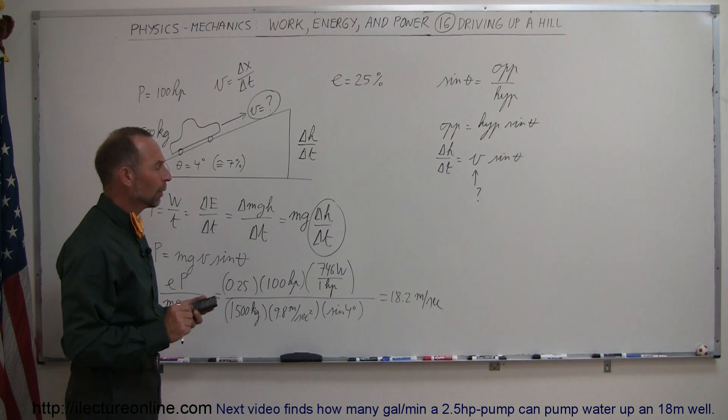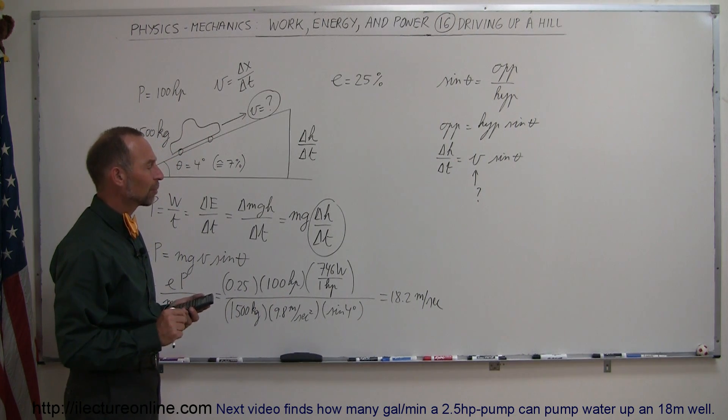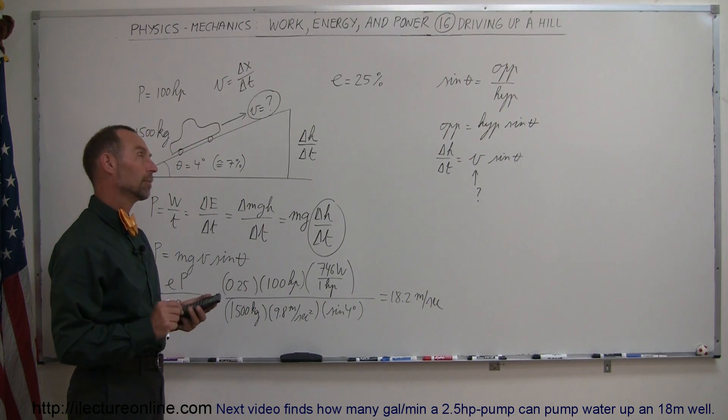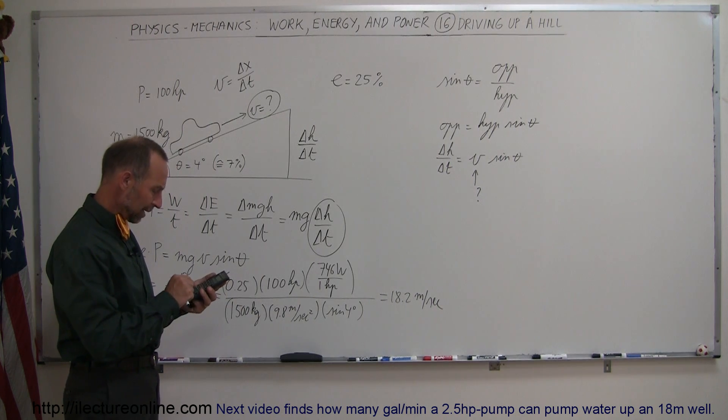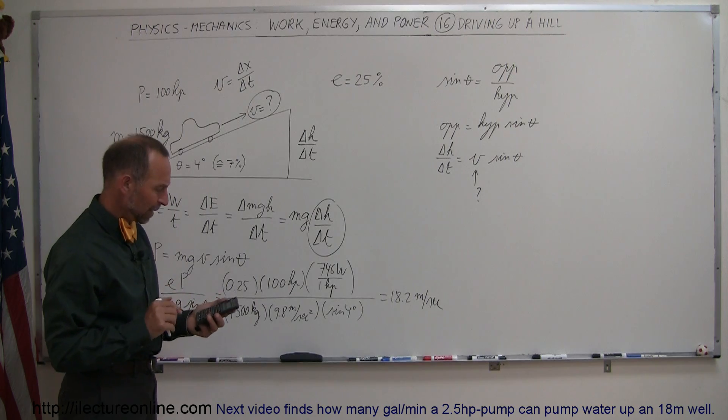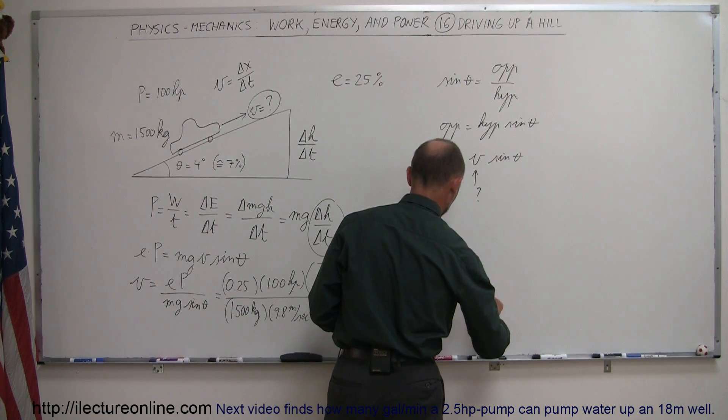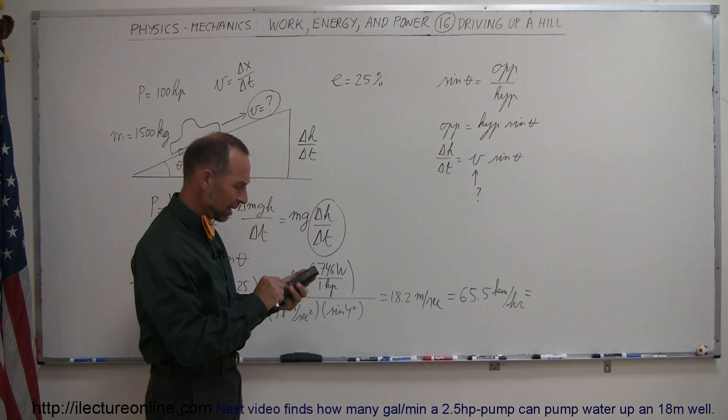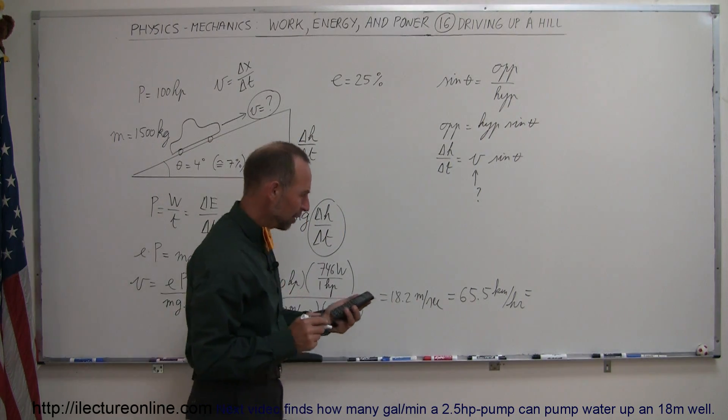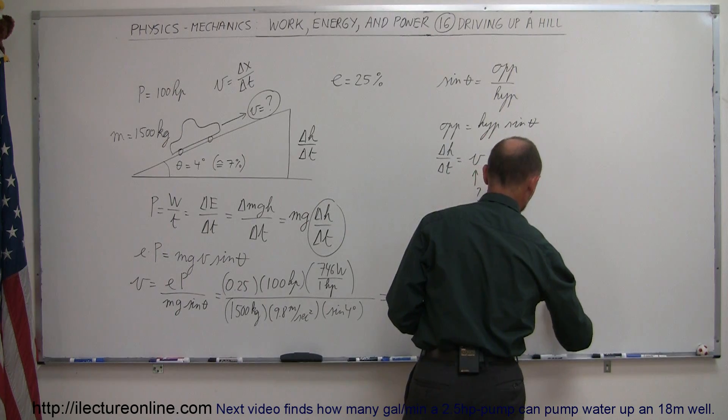In kilometers per hour, we want to multiply that times 3.6. I think that's correct. 3.6. Yep. All right. So if we multiply that times 3.6, that would be 65.5 kilometers per hour, and in miles per hour, we divide that by 1.609, and that would be 40.7 miles per hour.